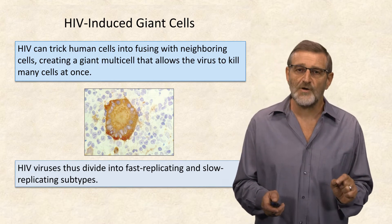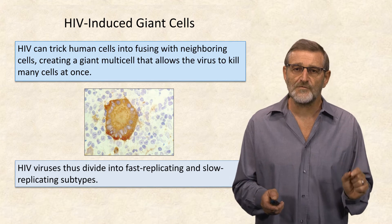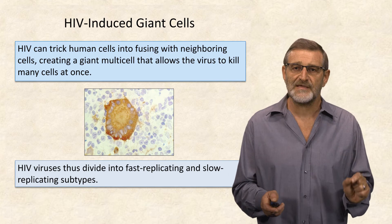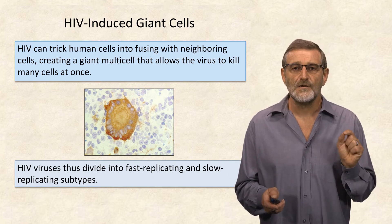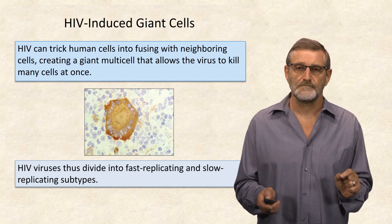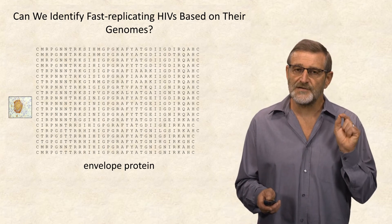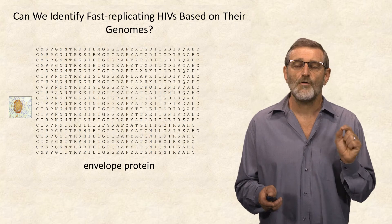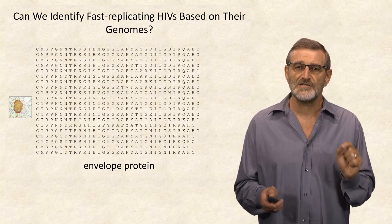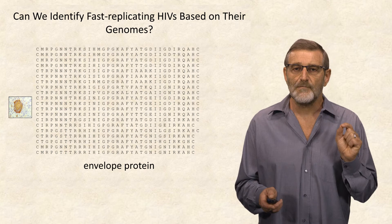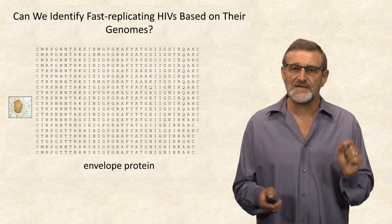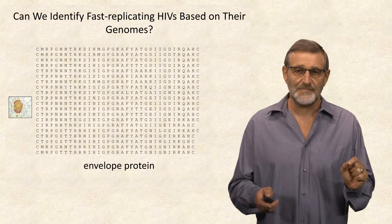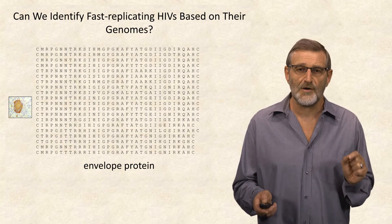Imagine that you are a doctor who wants to figure out whether your HIV patient has developed a fast-replicating subtype. What would you do? Today, you can determine sequences of dozens and even hundreds of various HIV genomes circulating in a patient. But how would you figure out whether some of them represent a fast-replicating subtype — a difficult machine learning problem?